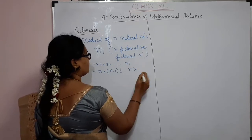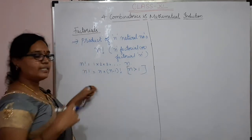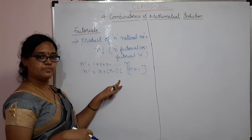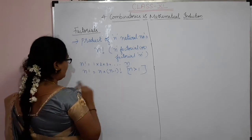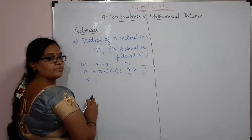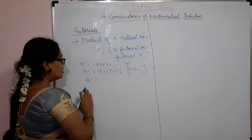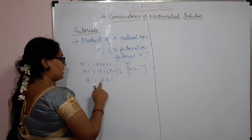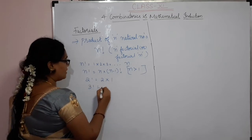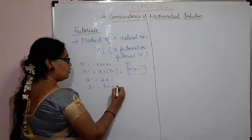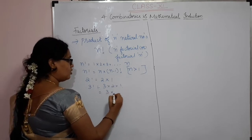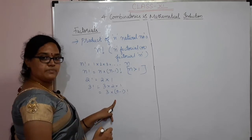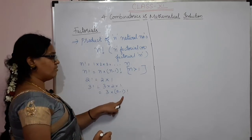Why do we say N factorial equals N × (N−1)!? Because N! = N × (N−1) × (N−2)! for N greater than 2. This recursive representation is N factorial.